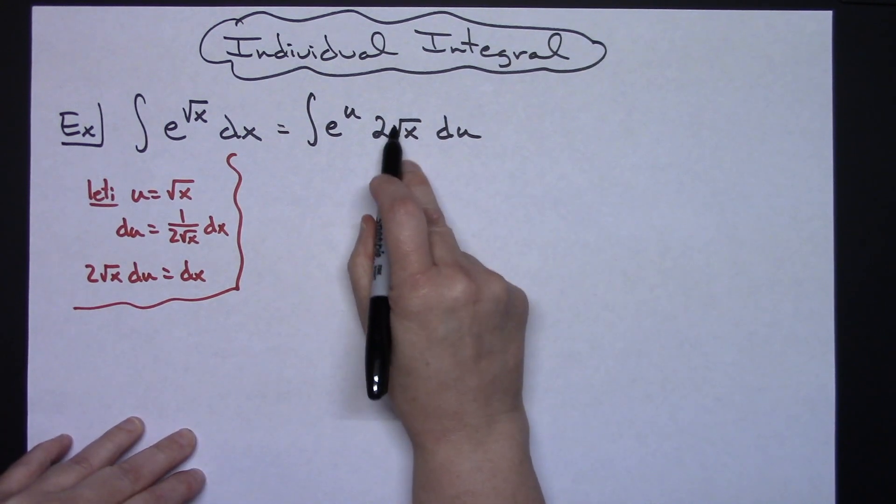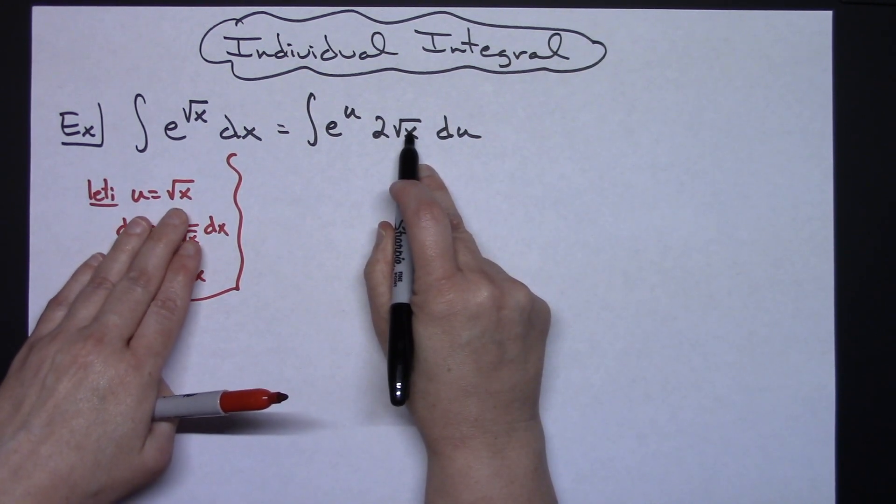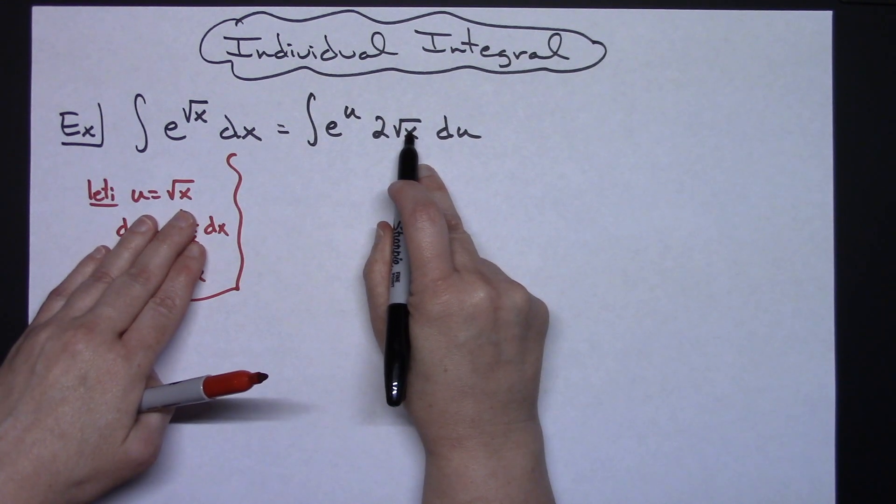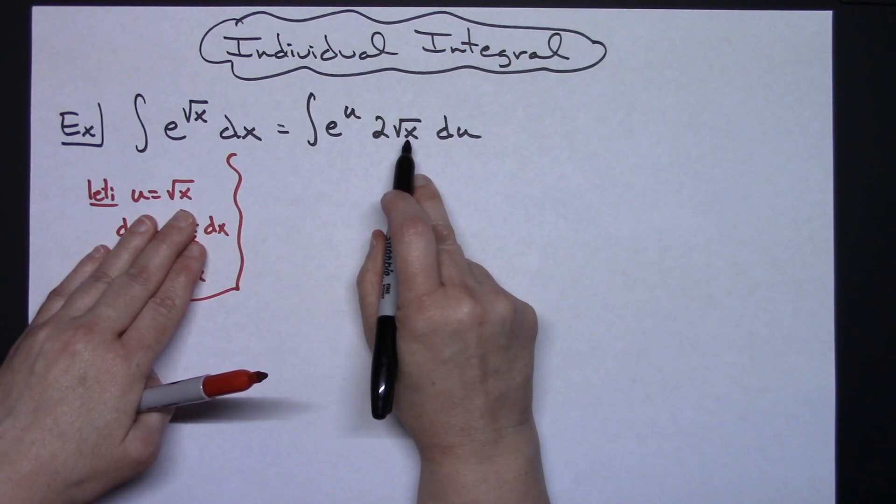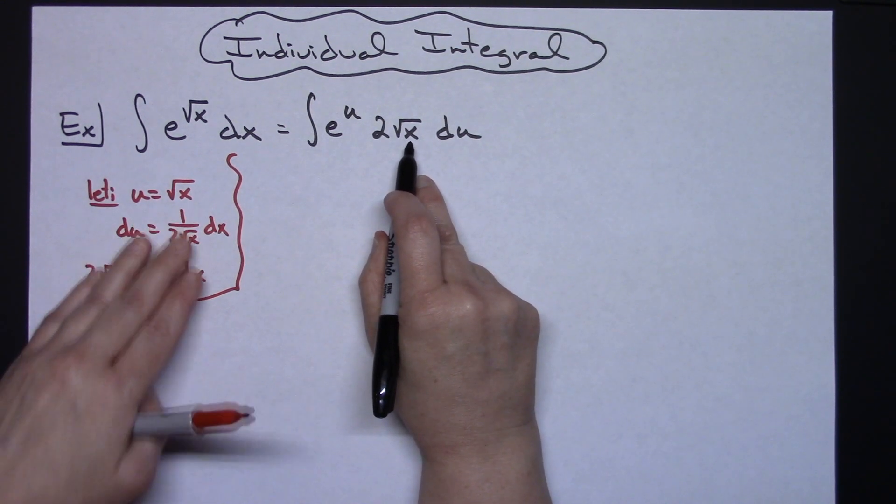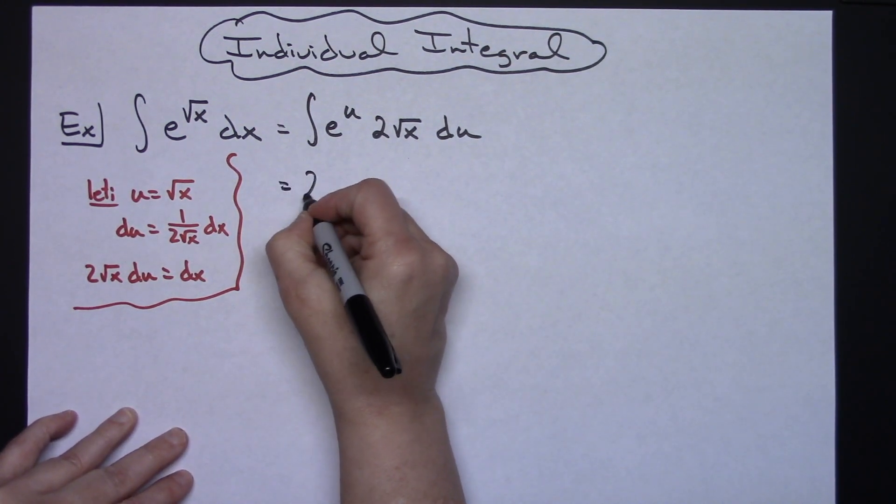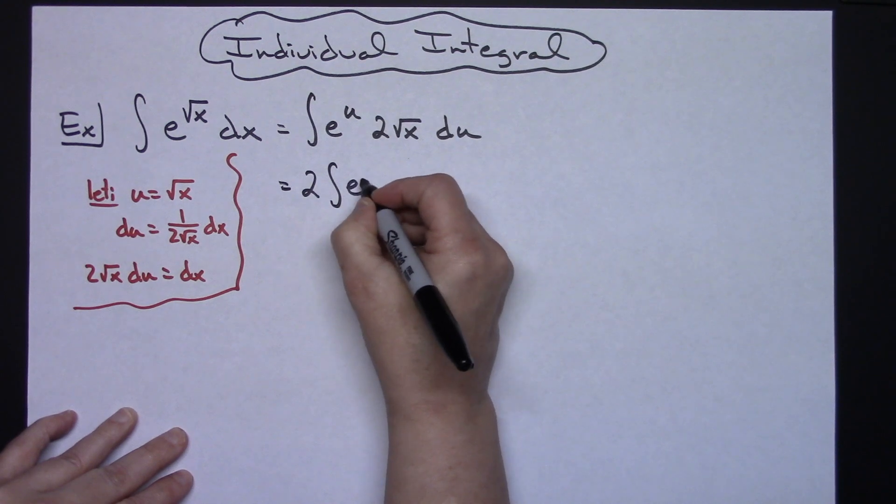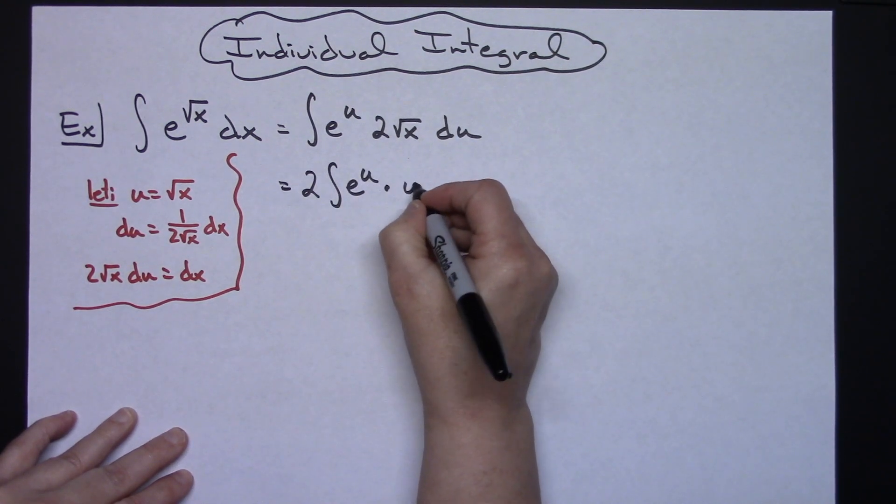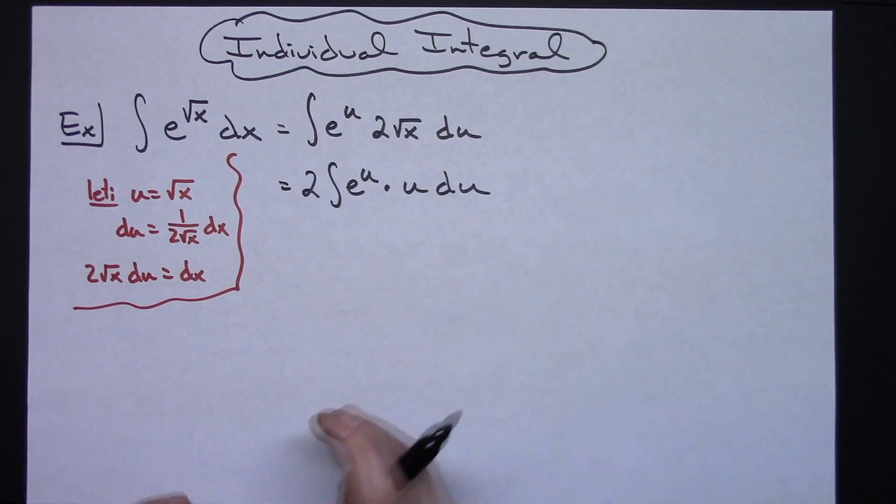Now at this point notice that you still have that square root of x, but originally we said u was going to be square root of x so I can go ahead and replace this with a u. And when I do that, at the same time I'm going to go ahead and pull that 2 out in front. So I'll have 2 times the integral of e to the u times u and then du.